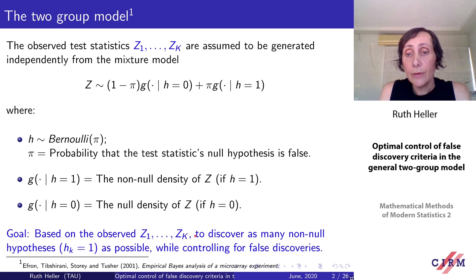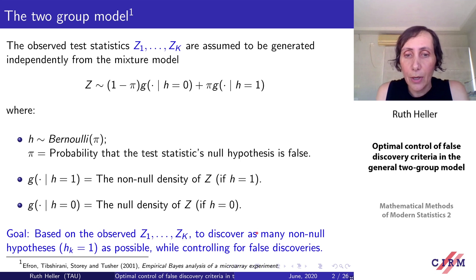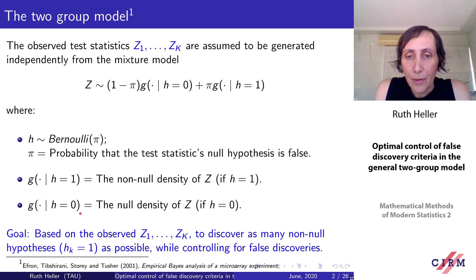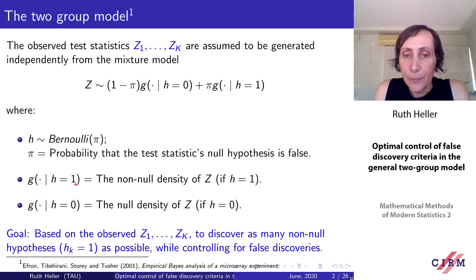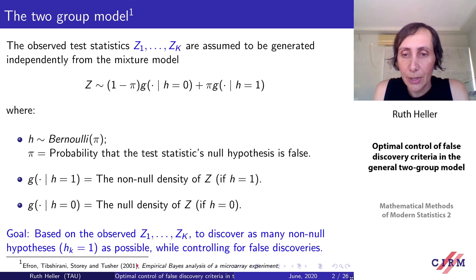The goal, given the observed statistic, is to identify the non-null hypotheses — those with hypothesis state H equals one, where H equals one if it's non-null and H equals zero if it's a null hypothesis.